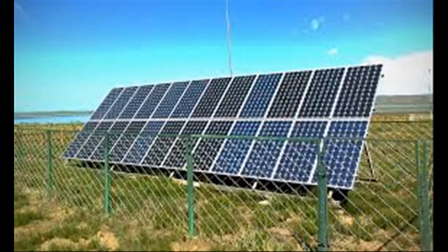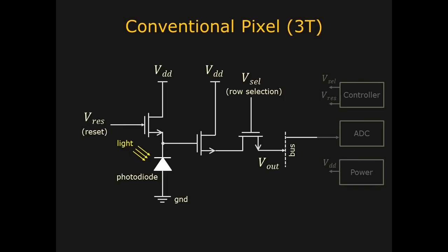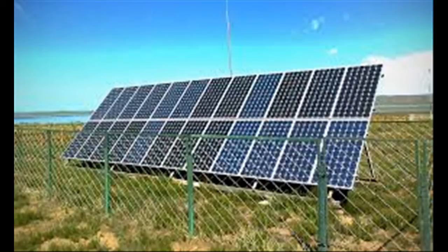The same photodiode is also used in solar panels to convert incident light to electric power. The photodiode in a camera pixel is used in the photoconductive mode, while in a solar cell it is used in the photovoltaic mode.